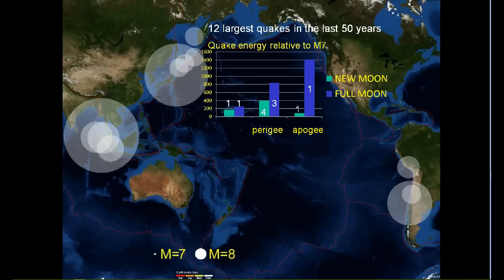Seven out of twelve earthquakes occurred during perigee, when Moon was closest to Earth. Eleven out of twelve earthquakes were associated with either Full Moon or New Moon. But there is something strange about this graph.